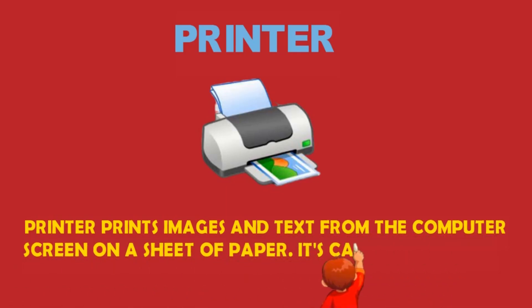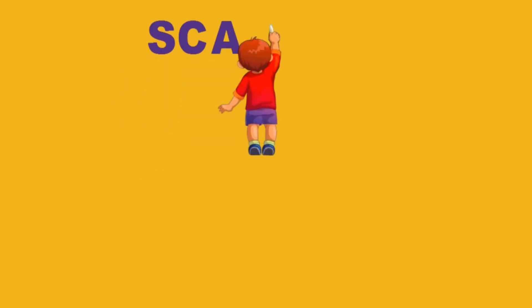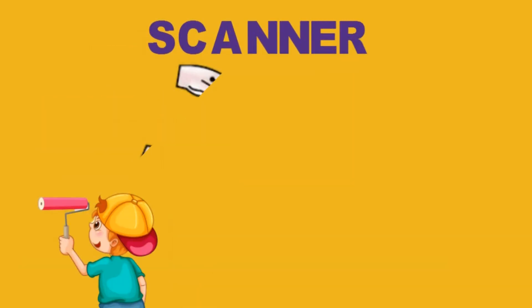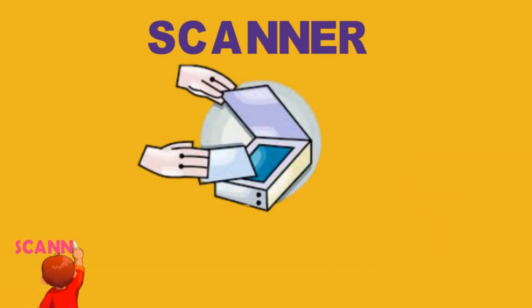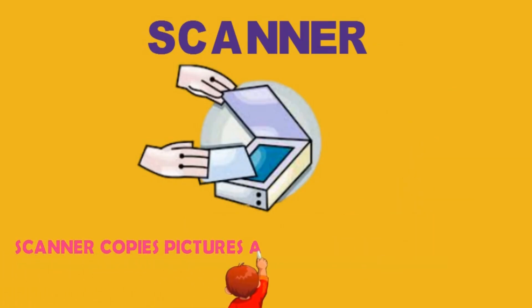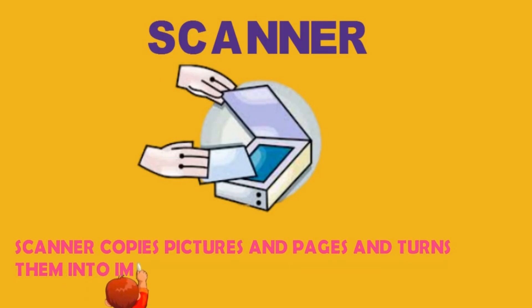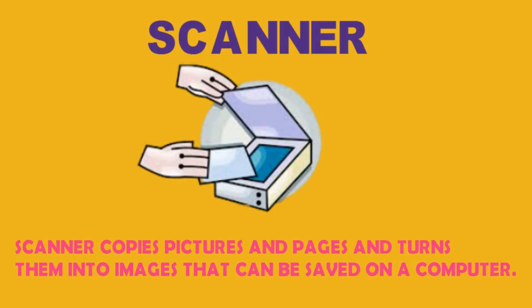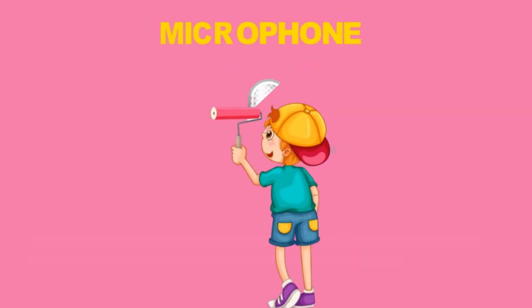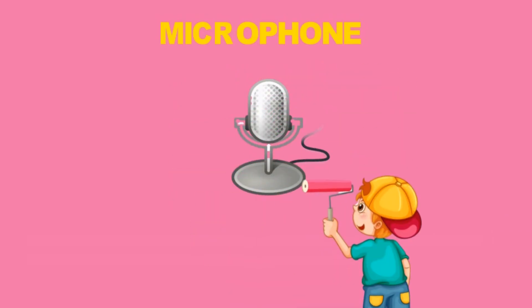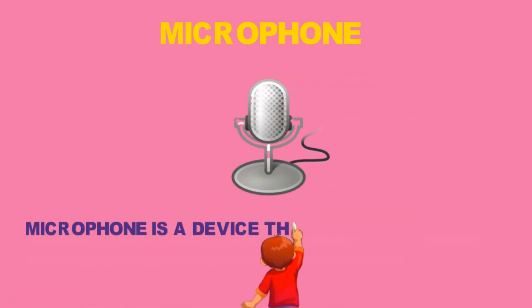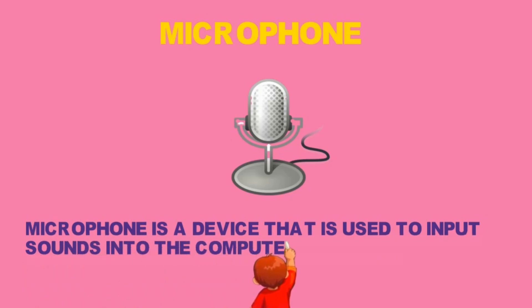Printer. A printer prints images and text from the computer screen on a sheet of paper — this is called a printout. Scanner. A scanner copies pictures and pages and turns them into images that can be saved on a computer.